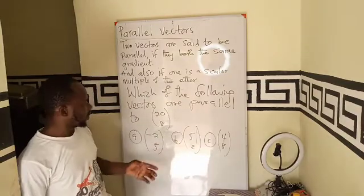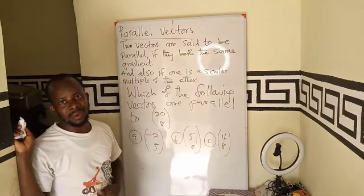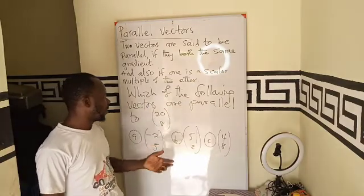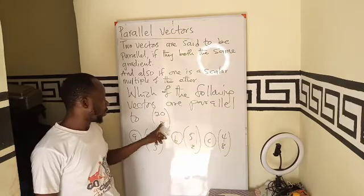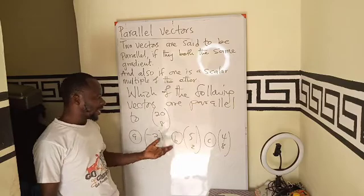Now, we have this question. Normally, this kind of question, we see them in the objective. So we are saying that which of the following vectors are parallel to the vector (2, 8)?